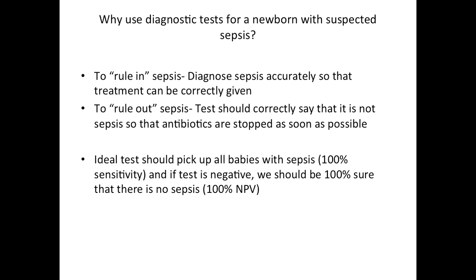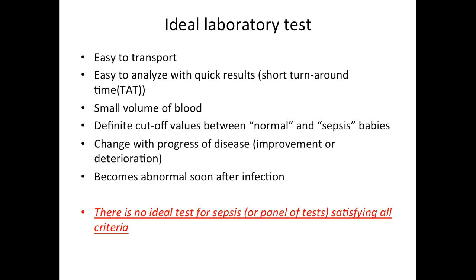An ideal test should pick up all babies with sepsis — that means it should have 100% sensitivity — and if the test is negative, we should be able to say there is no sepsis with 100% confidence, meaning 100% negative predictive value. But in reality, 100% sensitivity and 100% negative predictive value are not achievable. An ideal lab test should also be easy to transport, have a short turnaround time, require small blood volumes, have standard cut-off values, and show change with disease progress. In reality, there is no ideal test satisfying all these criteria.